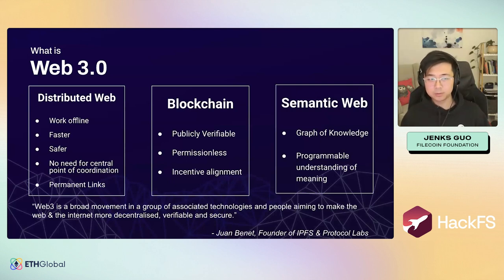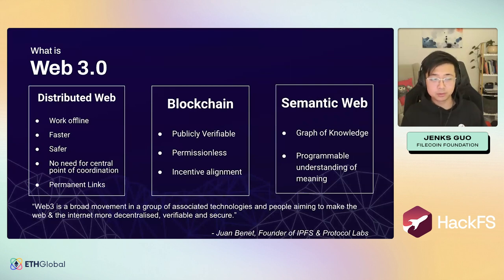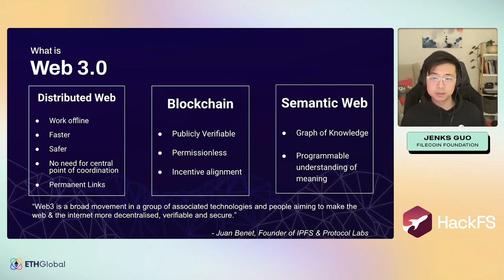There isn't yet a strict definition of web3, but it represents a group of people and technologies working toward decentralization. Web3 has three components: at the physical and protocol level, it should be a distributed web — designed to work offline, be faster not slower, safer, with no central point of coordination, and permanent links for content online.